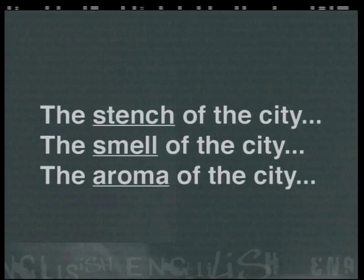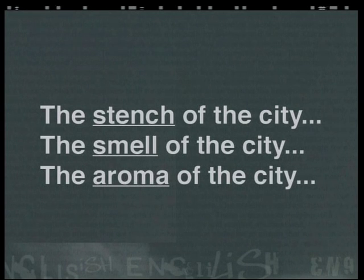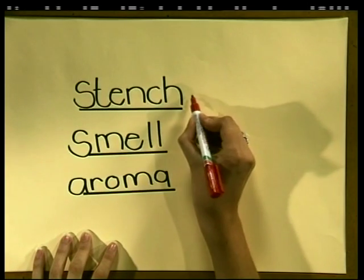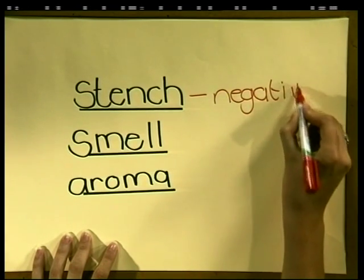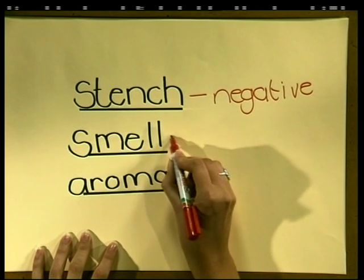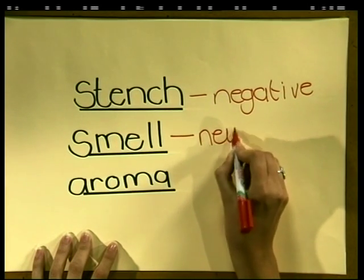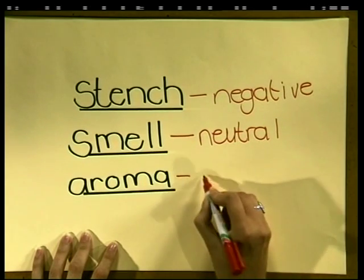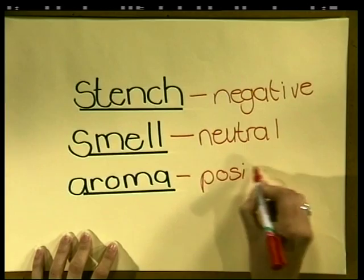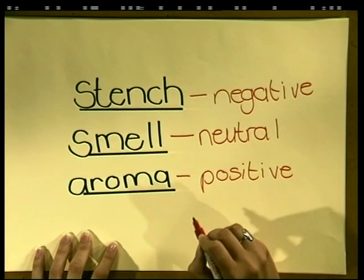Now the specific words or diction that the poet has chosen can also indicate the tone of the poem. For example: the stench of the city, the smell of the city, the aroma of the city. The word 'stench' carries a negative connotation, and the word 'smell' carries a more neutral connotation, while 'aroma' has a positive tone of admiration.